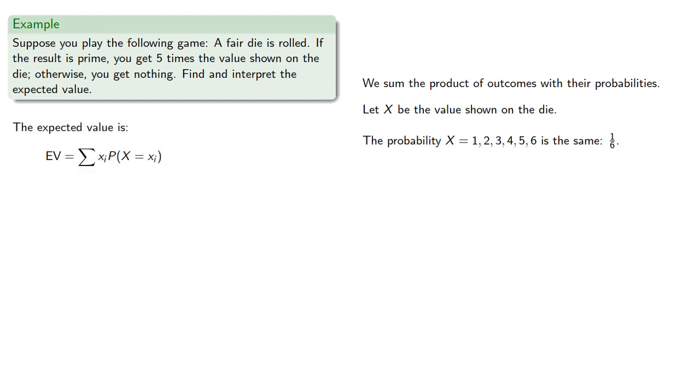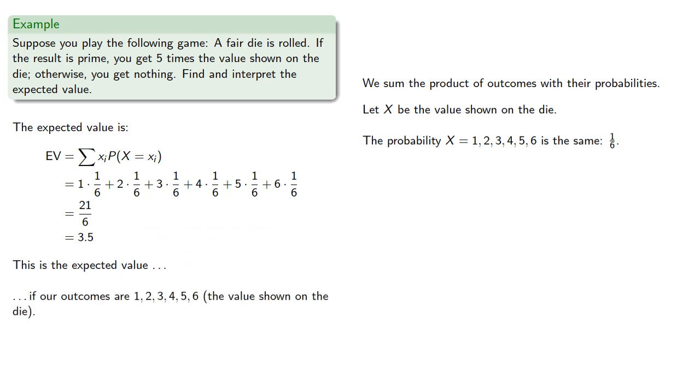...the sum of the product of the outcomes with their probabilities. And so we find, and this is the expected value, if our outcomes are one, two, three, four, five, or six, the value shown on the die.